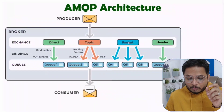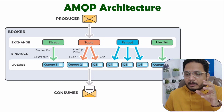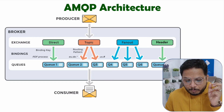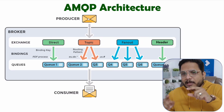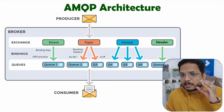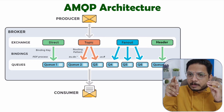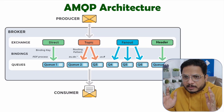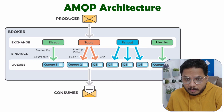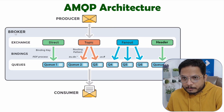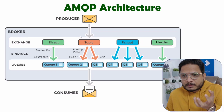In the publish-subscribe model, there is a producer or publisher who publishes topics. Subscribers subscribe to topics and based on their subscription they receive messages. The producer publishes a topic, it goes to a broker, and the broker forwards topic-wise messages to the subscriber.